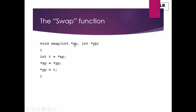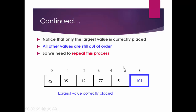The swap function takes two values along with their addresses as pointers. We use a temporary variable t to store the first value. Then the first variable x gets the value of y, and y gets the value of t. For example, if we pass 5 and 6: t stores 5, x becomes 6, then y becomes t which was 5 — so they got swapped.